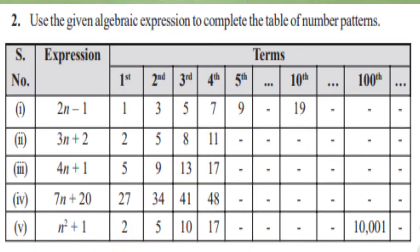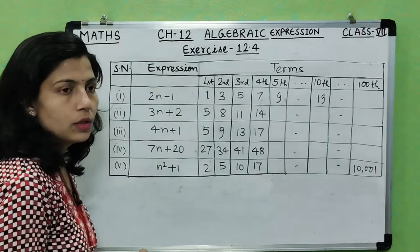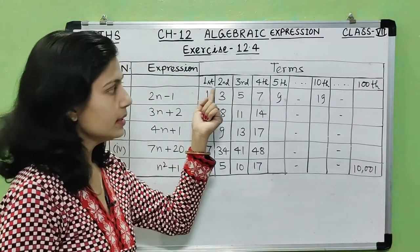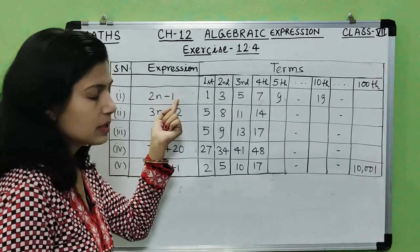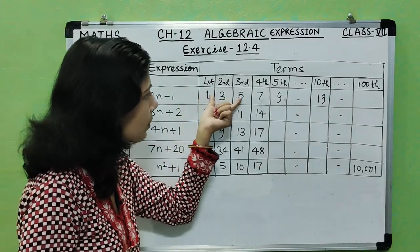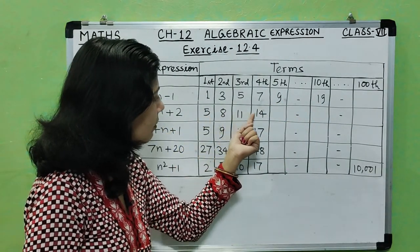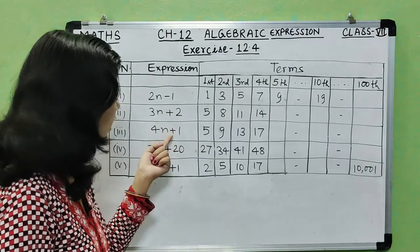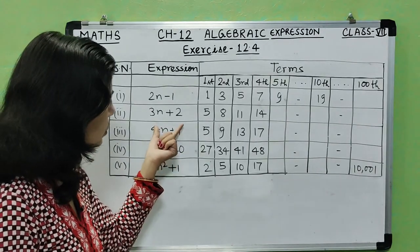Question number 2: use the given algebraic expressions to complete the table of number patterns. A table is given with patterns and corresponding algebraic expressions, and you must use each expression to complete the missing terms. The first expression is 2n minus 1, the second is 3n plus 2, the third is 4n plus 1, the fourth is 7n plus 20, and the fifth is n squared plus 1.